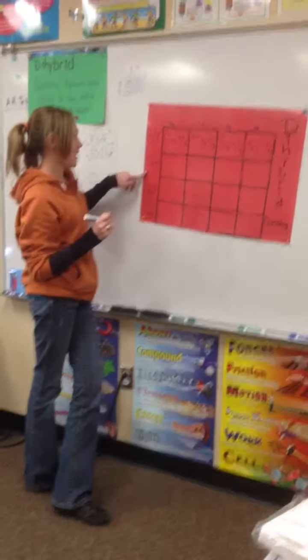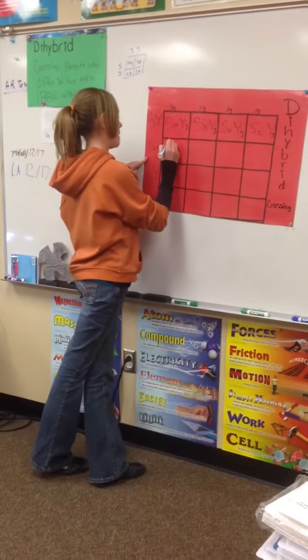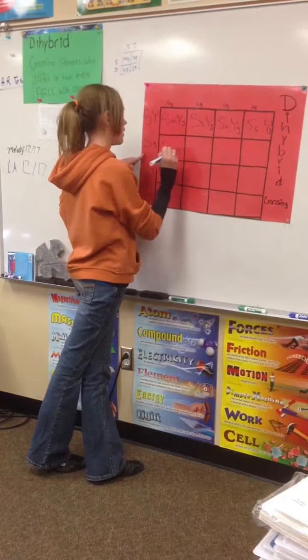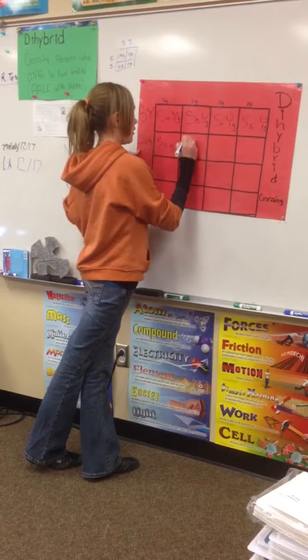Now the second line is big S, little s, little y, little y. So that will go through all of these.